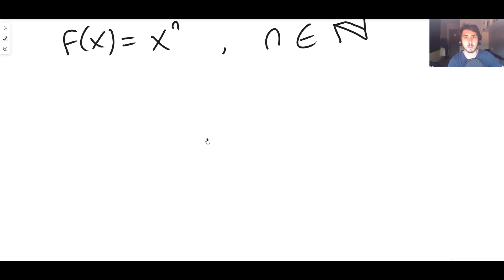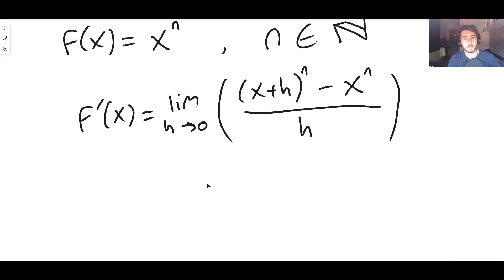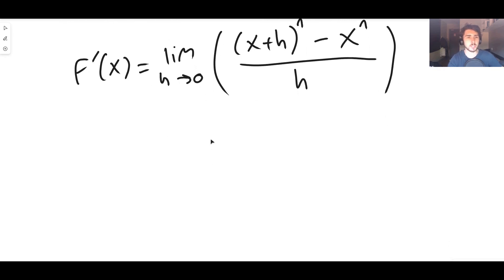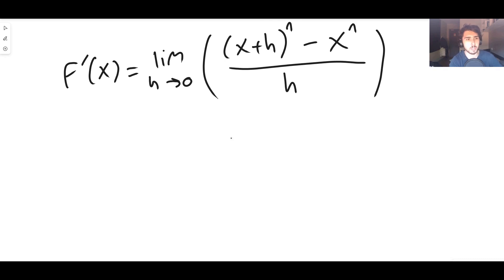Well, we can say that the derivative of f of x is simply going to be the limit as h goes to zero of f of x plus h. In this case, because f of x is x to the n, it's x plus h to the n minus f of x, which is just x to the n, and it's over h. Okay, but h can't actually be zero of course, because if it was then we'd be dividing by zero, so we have to expand out and rearrange.